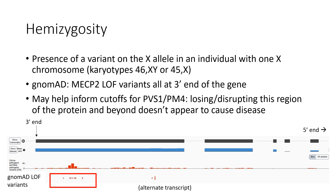Observations like this suggest that three prime truncations in this area are not truly loss of function, and that the region of the protein that is lost isn't likely to have great functional importance. These are pieces of information taken into consideration when thinking about what, if any, pathogenic criteria would be applied to three prime truncating variants in this gene.